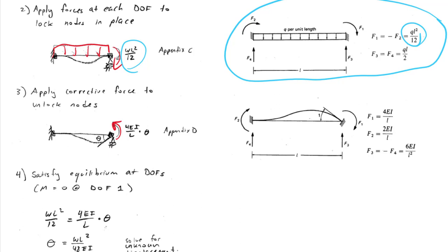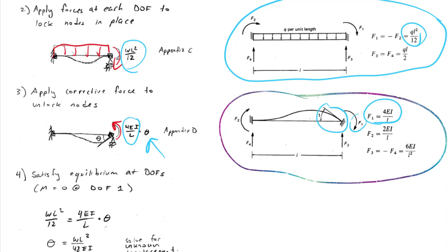Here's where we use the value from appendix D, which we see here at the end that's being rotated is F1. That's 4EI over L. And that's the value we have here. Now we're going to scale that by the actual unknown value of the rotation.